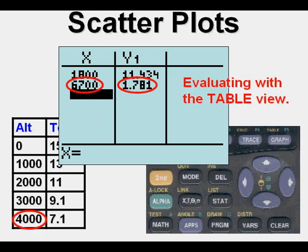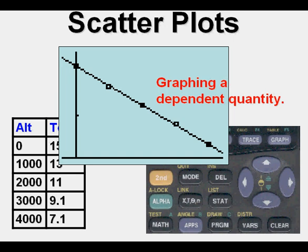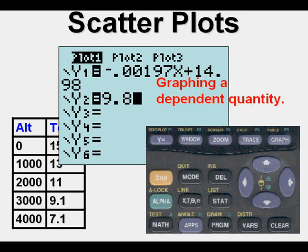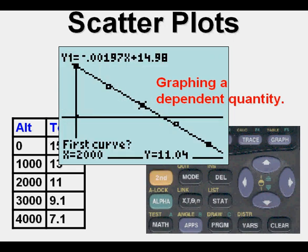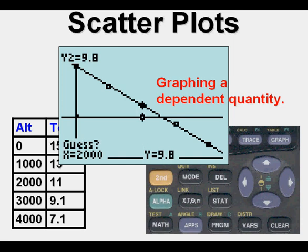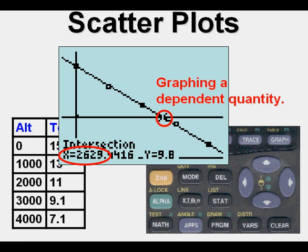We can also graph a dependent quantity. If we want to find out at what height it would take to reach a certain temperature, we go to Y equals and enter a value. In this case, we want to find out what altitude gives a temperature of 9.8 degrees centigrade. We enter 9.8, press GRAPH, and a horizontal line at 9.8 appears. Using 2nd, TRACE, 5, ENTER three times, we find that 9.8 degrees centigrade corresponds to an altitude of 2,629 feet.